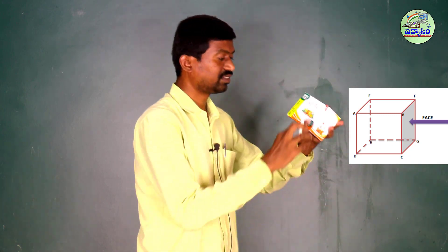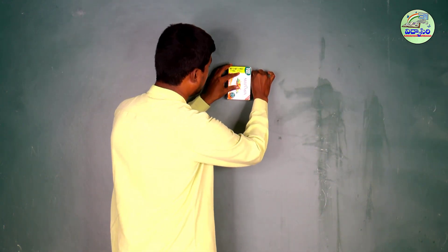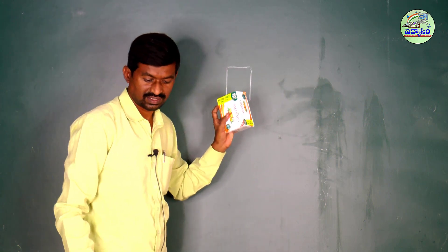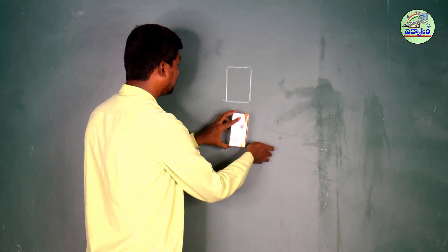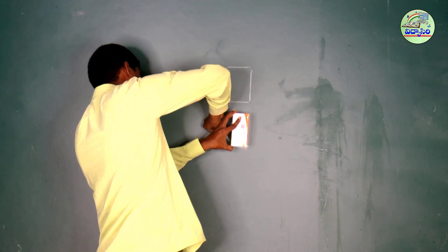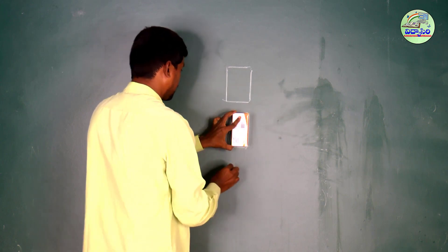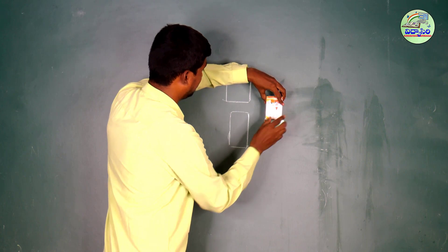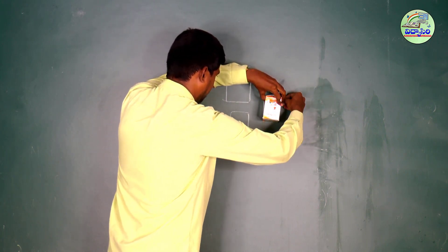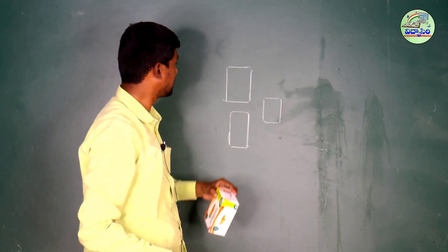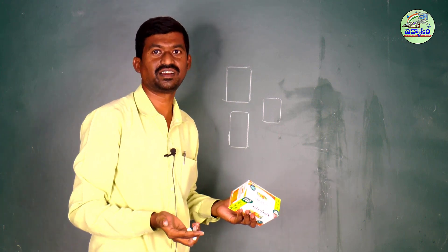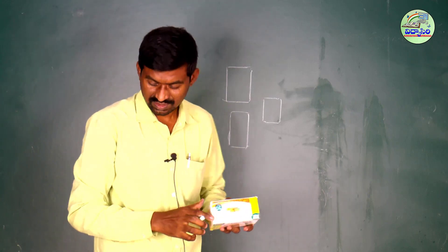Now I am tracing these faces. This front face is looking like this, and this side one — tracing now. Children, are these the same or not? Another one. Children, are these three looking the same or different? Now we are seeing these are different. Do all the faces look the same? No, not the same.